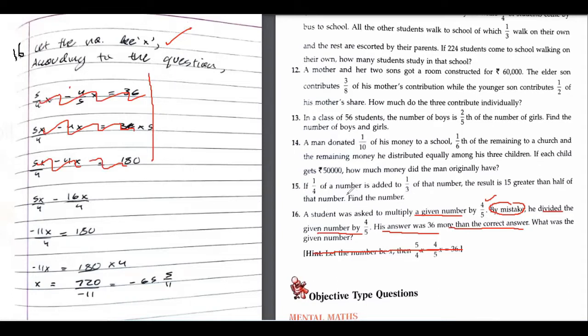A student was asked to multiply a given number, so what is the correct thing to do? 4/5 multiplied by x, isn't it? What was the mistake? He divided the number by 4/5.